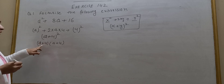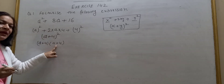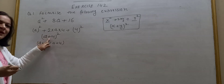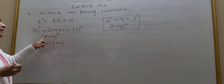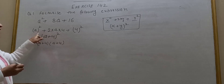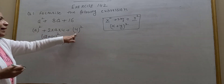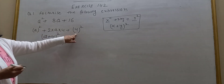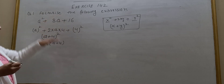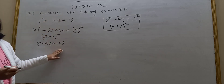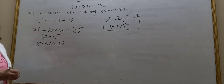In the previous chapter, you used to expand A plus 4 into A plus 4 using the identity A plus B whole square equals A squared plus 2AB plus B squared, and you would solve and get the answer. Now it is the reverse — now the answer is given and you have to reach the question. Factorize. Clear?